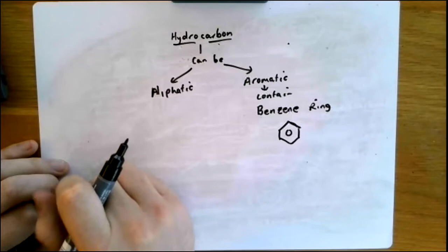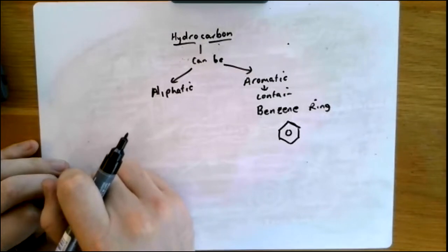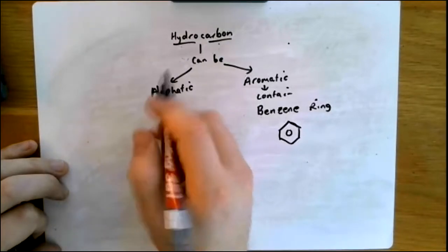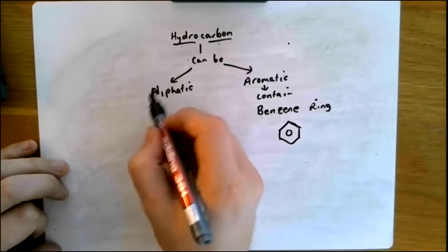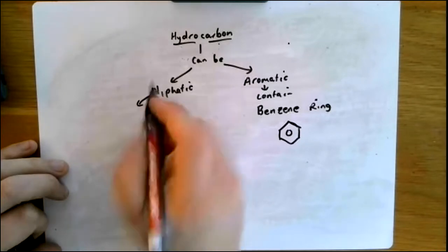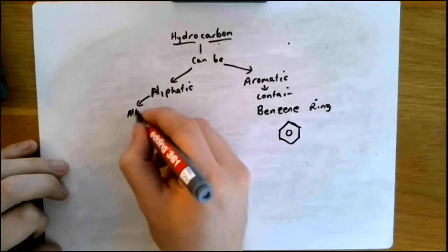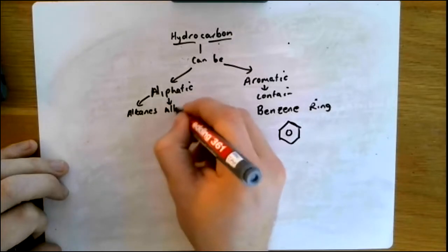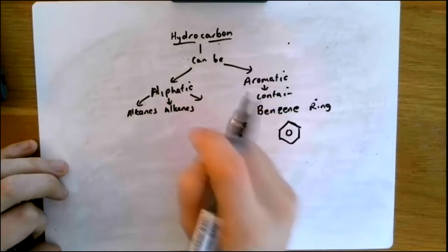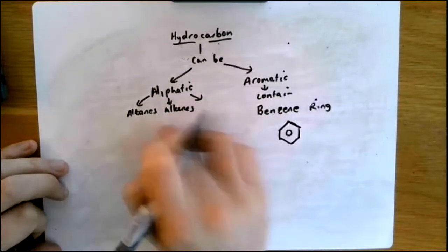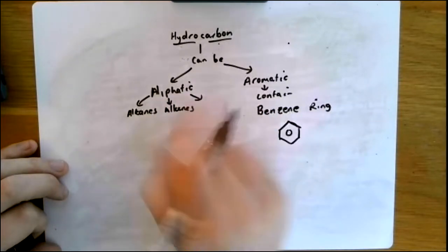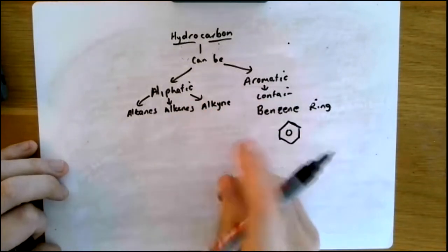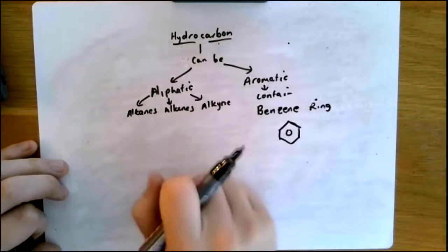Aliphatic hydrocarbons have three main families. Tell me the three families of aliphatic hydrocarbons please. I'm hoping that you said alkanes, alkenes, and alkynes — the three families of aliphatic hydrocarbons.